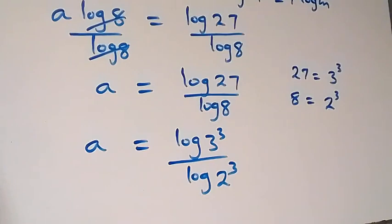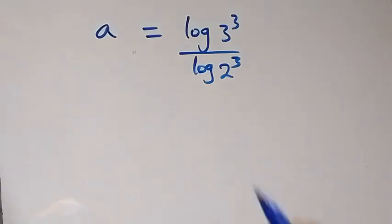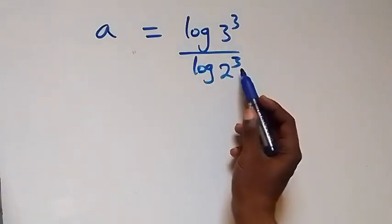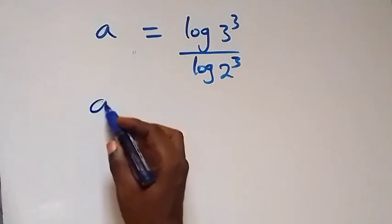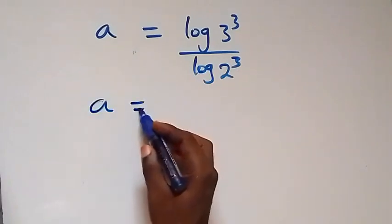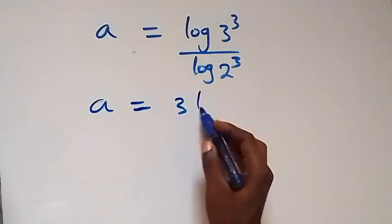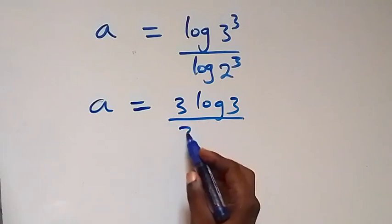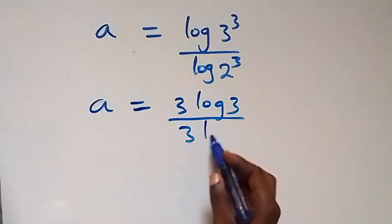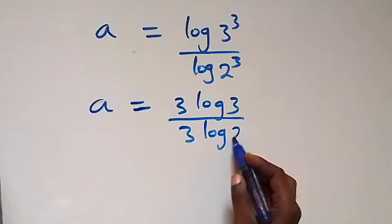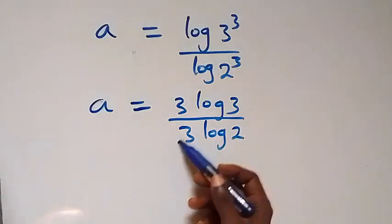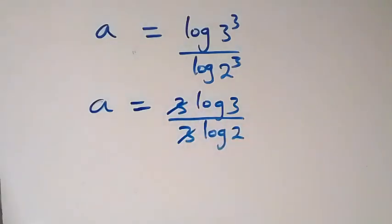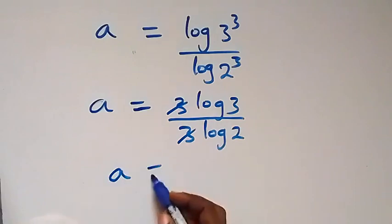Thank you. From here, also applying the power law, the 3 can come out in front of both, and we have a equals 3 log 3 divided by 3 log 2. From here these 3s cancel each other, and we have a equals log 3 over log 2.